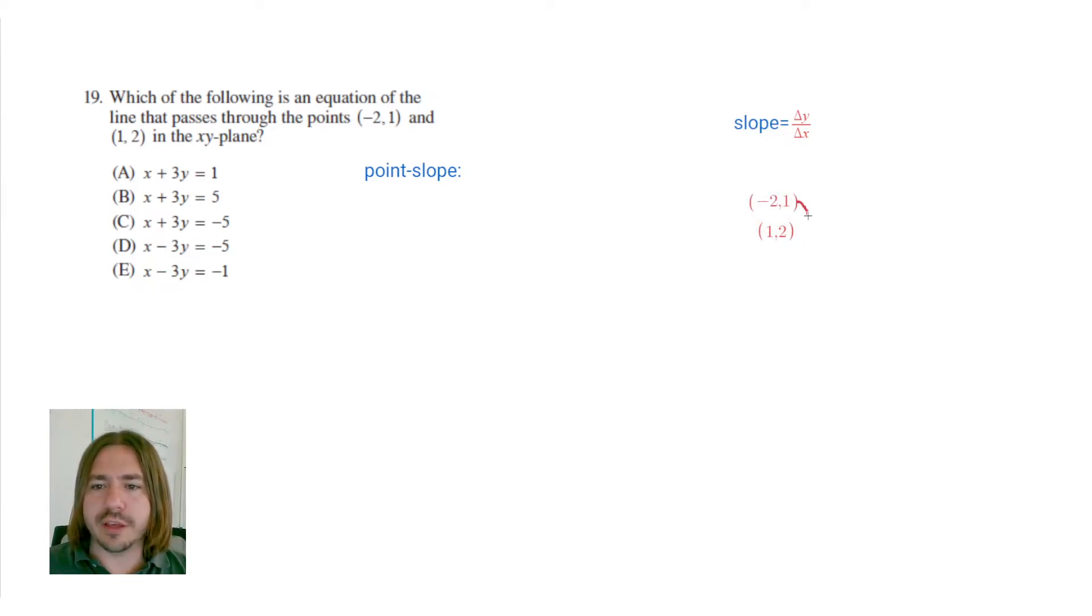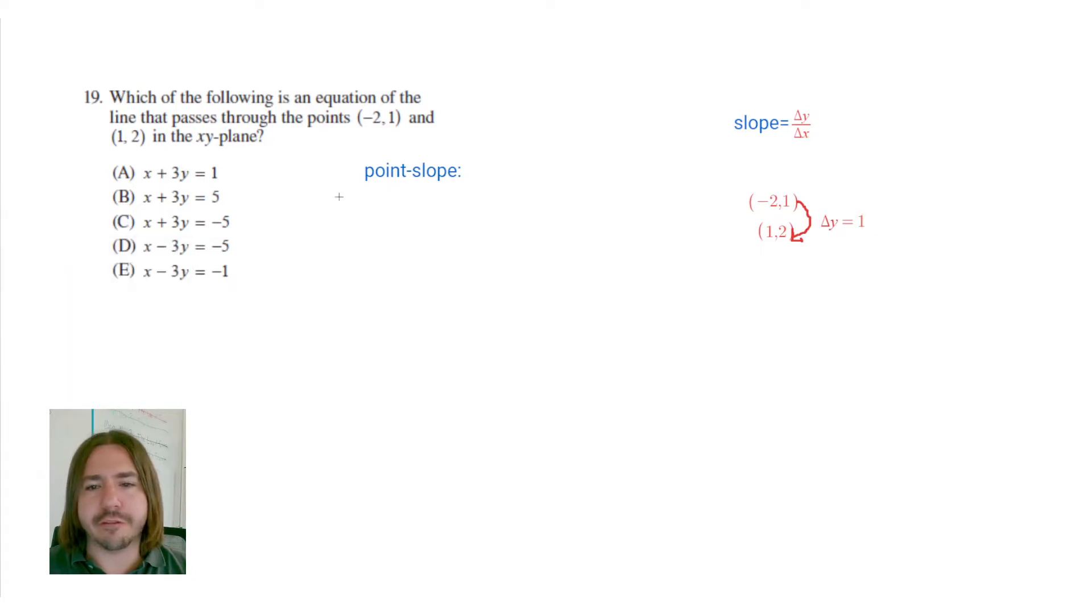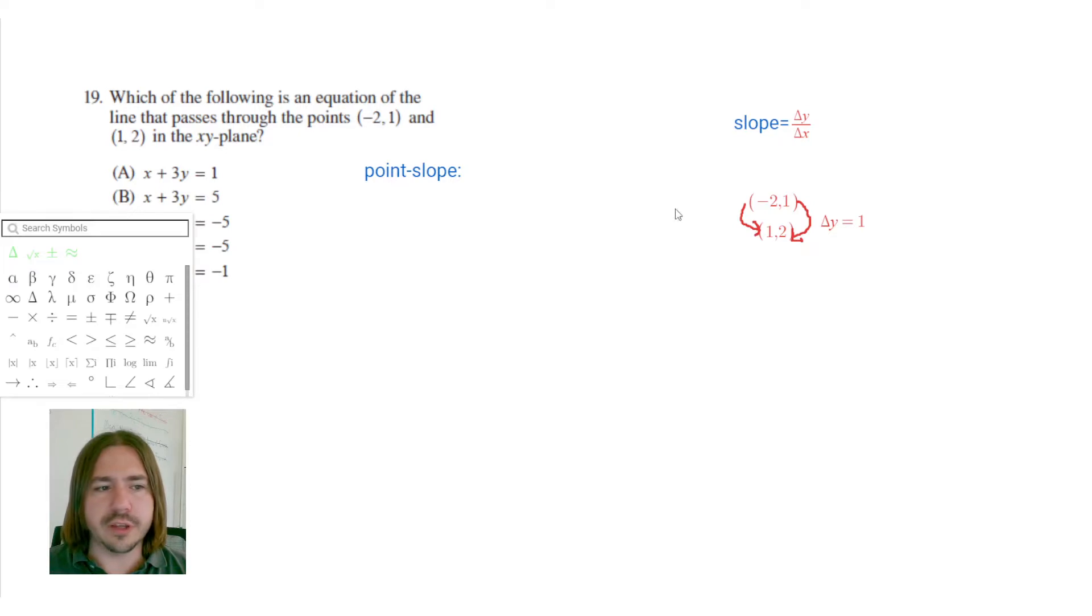So my change in y here, I'm going to ask myself, how do I get from the first y value to the second y value? How do I get from 1 to 2? To get from 1 to 2, I need to add 1. So my change in y is 1. Now, to get the change in x, how do I get from -2 to 1? To get from -2 to 1, you would add 3. So the change in x is 3. So my slope here is going to be 1 over 3 or 1/3.